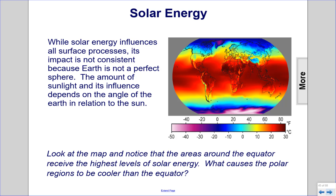Solar energy. While solar energy influences all surface processes, its impact is not consistent because Earth is not a perfect sphere. The amount of sunlight and its influence depends on the angle of the Earth in relation to the Sun. Look at the map and notice that the areas around the equator receive the highest levels of solar energy. What causes the polar regions to be cooler than the equator?